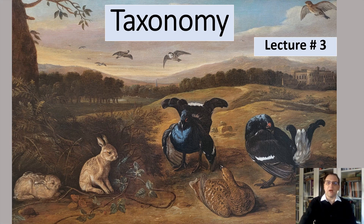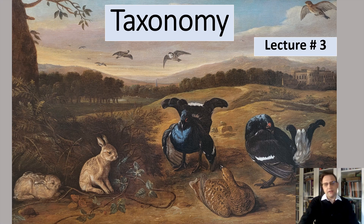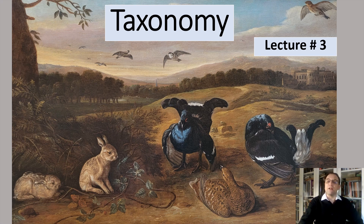The diversity of living organisms on our planet is truly astonishing, almost overwhelming. Humans have come up with ways of organizing or classifying biological diversity. In this lecture, we are going to discuss a branch of biology called taxonomy. It has nothing to do with the IRS, but with the organization of living things into certain groups depending on their ancestry.